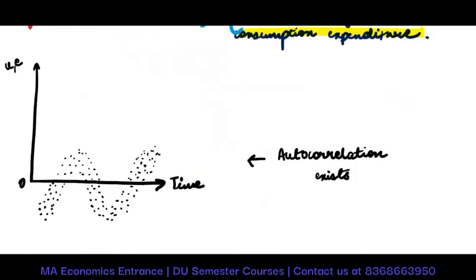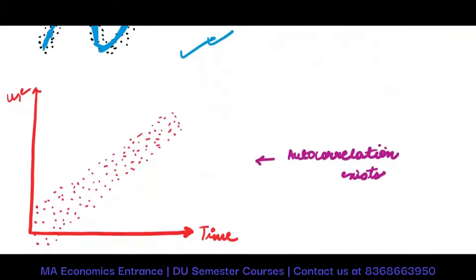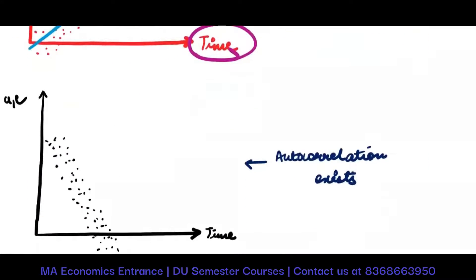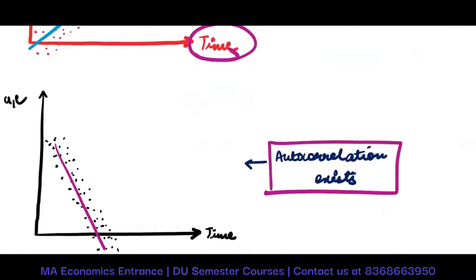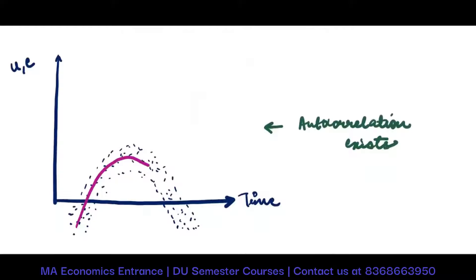Looking at the diagram: autocorrelation exists when you see a pattern — if moving towards an increasing trend, the errors keep increasing; if moving towards a decreasing trend, they keep decreasing. Then an increasing trend again, then increasing. Going towards a positive trend — autocorrelation exists. Plotting error terms against time, they follow a pattern. In the negative part, over time they keep becoming lower and lower. Again, a pattern is being formed over time — autocorrelation exists.